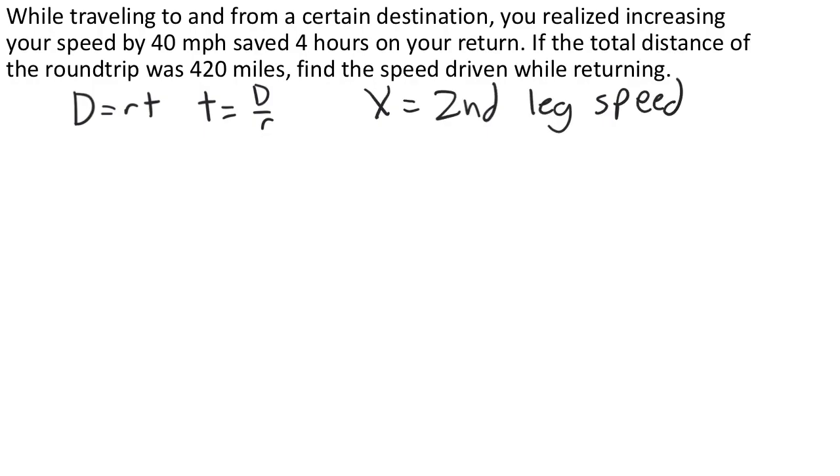We can also use this to come up with an expression for the first leg speed because we know that the second leg was supposed to be 40 miles per hour faster than the first leg, and so if x is the second leg speed, then x minus 40 is the first leg speed.